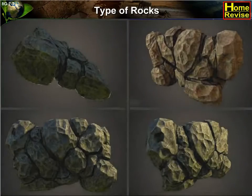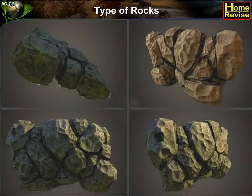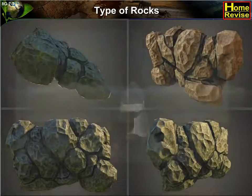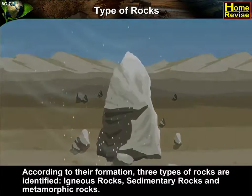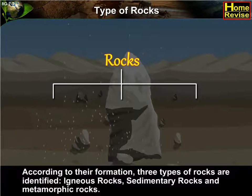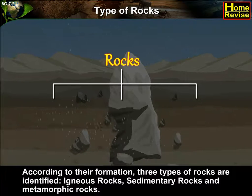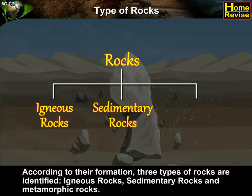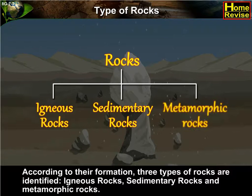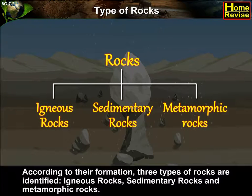Types of Rocks. According to their formation, three types of rocks are identified: Igneous Rocks, Sedimentary Rocks, and Metamorphic Rocks.